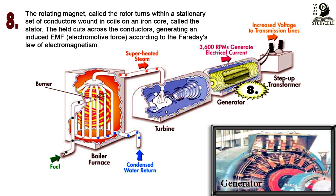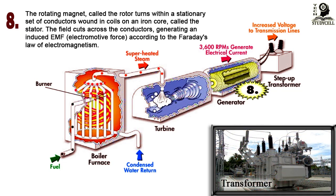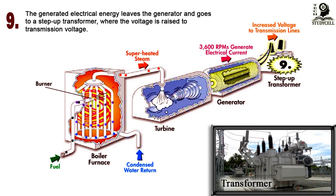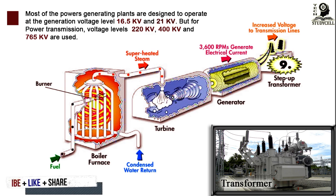The generated electrical energy leaves the generator and goes to a step-up transformer, where the voltage is raised to the transmission voltage. Most power generating plants are designed to operate at a generation voltage level of 16.5 kV and 21 kV.